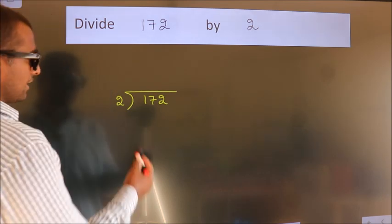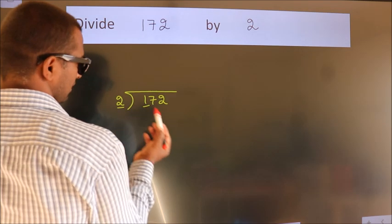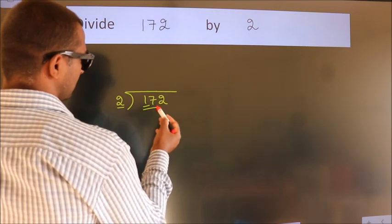Next. Here we have 1, here 2. 1 is smaller than 2, so we should take 2 numbers, 17.